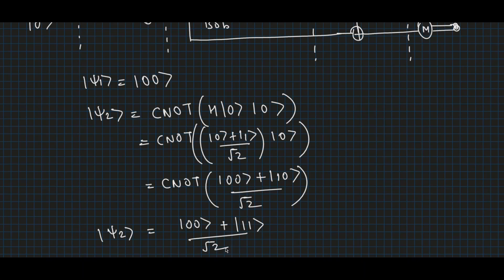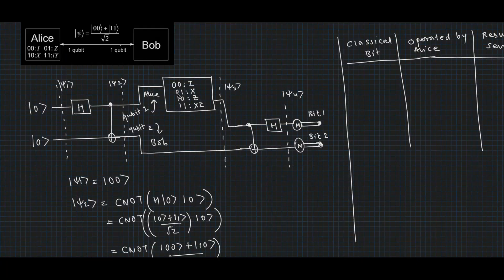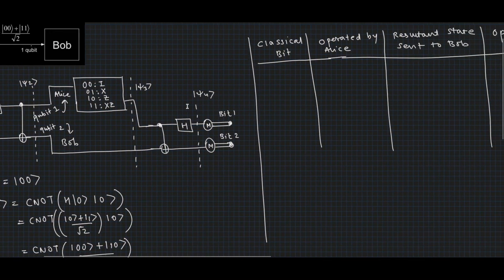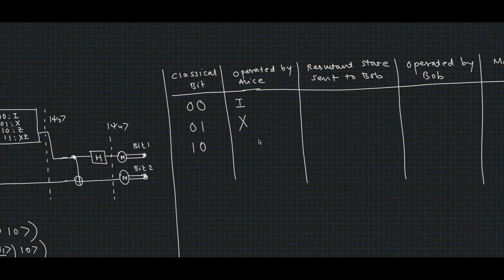This state ψ₂, which is a Bell state, is shared by Alice and Bob where both get one qubit, and this state is entangled. Now Alice has to send two classical bits to Bob. If she wishes to send 00, she operates her single qubit with the identity operator. If she wishes to send 01, she operates the X gate. If she wishes to send 10, she operates the Z gate. If she wishes to send 11, she operates first the Z gate and then the X gate on her single qubit.